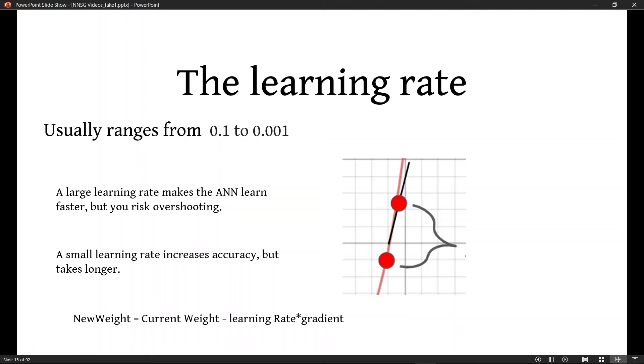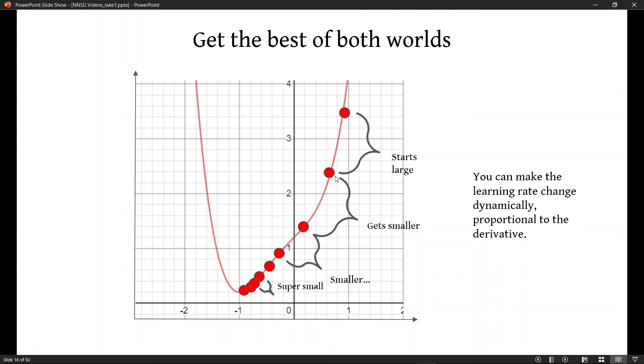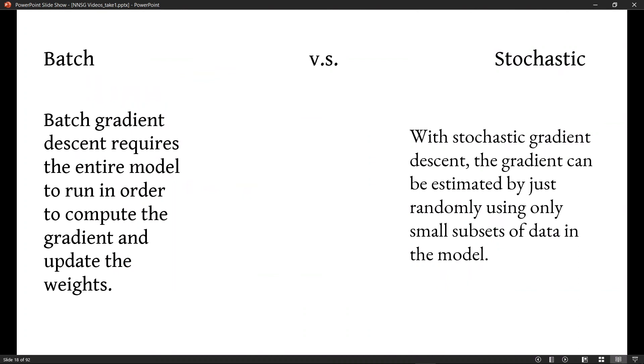So while I mentioned that having a large learning rate and a small learning rate are both bad for different reasons, or rather they have their pros and cons, you can actually get the best of both worlds by starting off with a large learning rate. So initially you're learning much faster, but then after each iteration, you reduce the learning rate so it becomes more and more accurate.